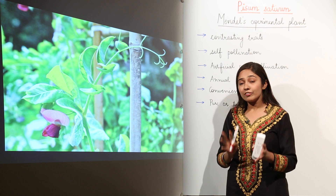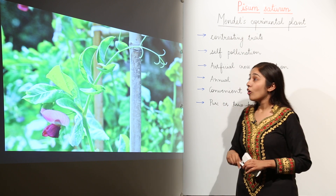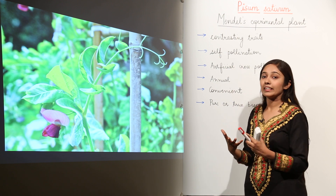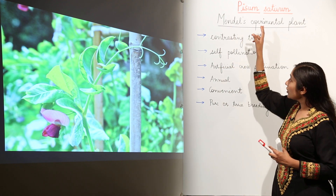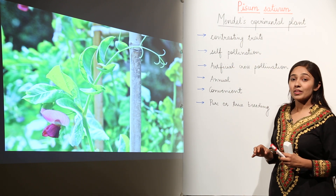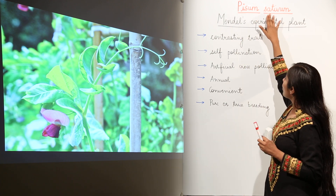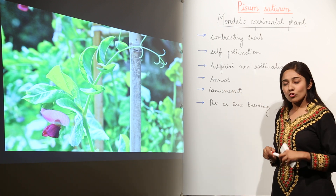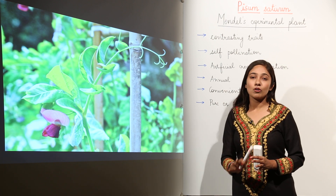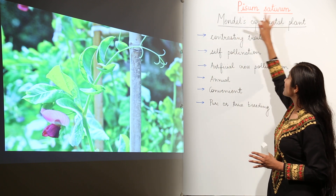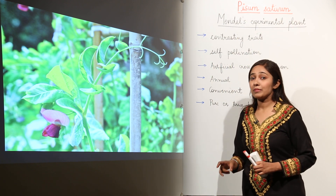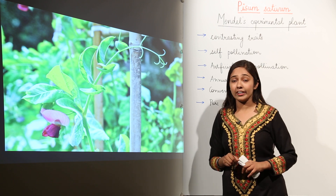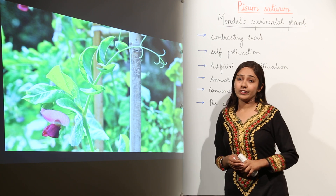Remember, whenever you write a scientific name, the genus name or the first name should always begin with an uppercase letter. And whenever you write the species name, it should always start with a lowercase letter. Don't forget the scientific name of garden pea plant — Pisum sativum — because all the experiments done on it have laid down the basic laws of heredity and given us the concepts of heredity.